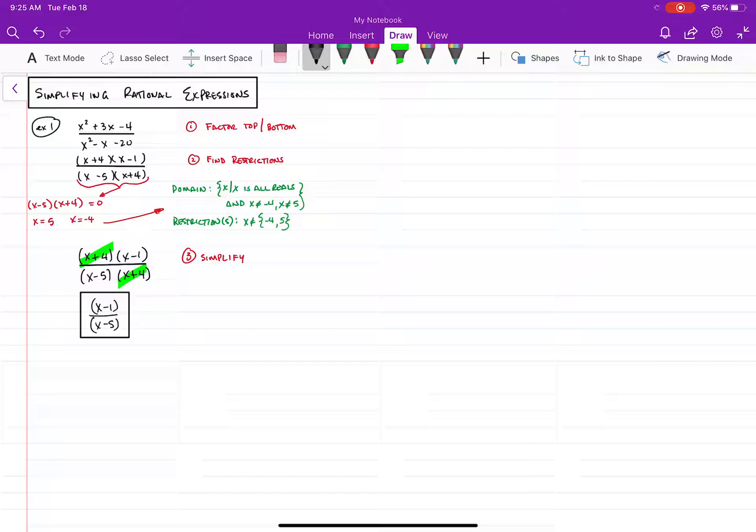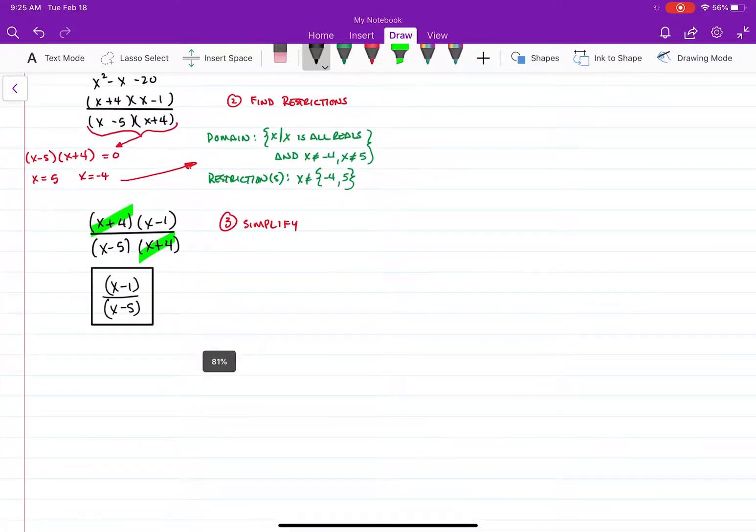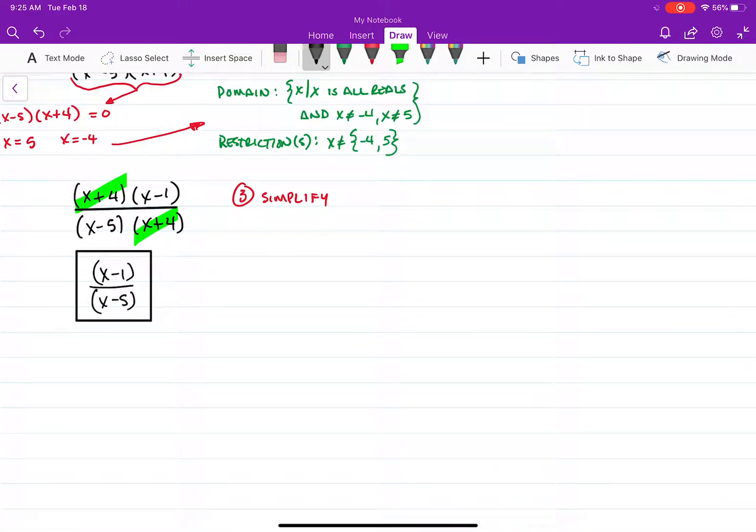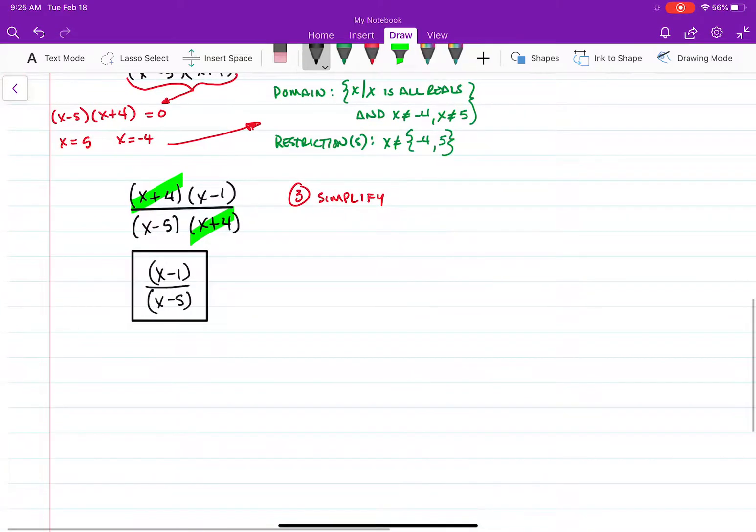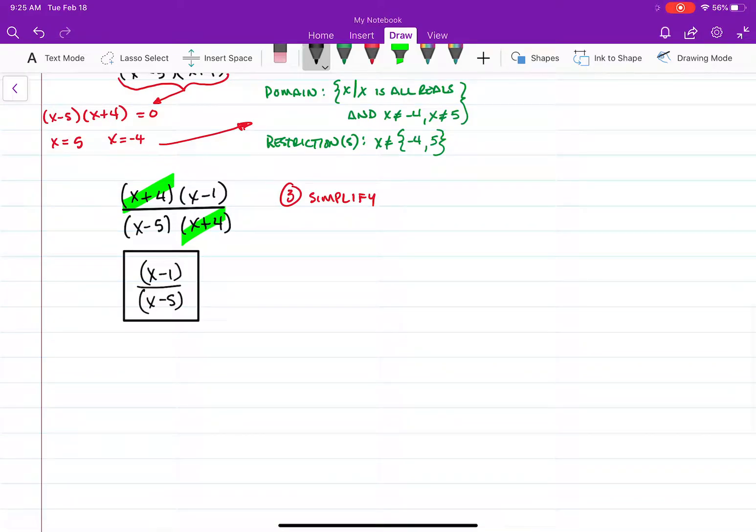So again, first, factor top and bottom. After that, to find the restrictions, I'm going to set the denominator equal to zero to find out what makes the denominator zero. And then write my domain and restrictions. And then I simplify. So basically, anything from top with anything on the bottom, I can cancel out as long as they're the same factors. Because essentially, those factors are numbers. So that would be the way to go.